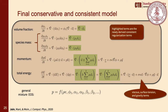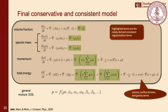Putting all equations together, the consistent corrections are highlighted. We also introduced viscous effects, surface tension, and gravity terms, and the five-equation model is closed with a general mixture equation of state. For implementation, I developed a solver called CTR3D, written in C++ using MPI for parallelization, with second-order central scheme in space and fourth-order Runge-Kutta in time. We have optimized the solver for parallel performance on Mira and Theta supercomputers, scaling well up to 400,000 CPU cores.